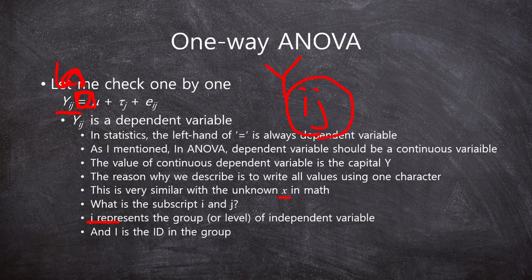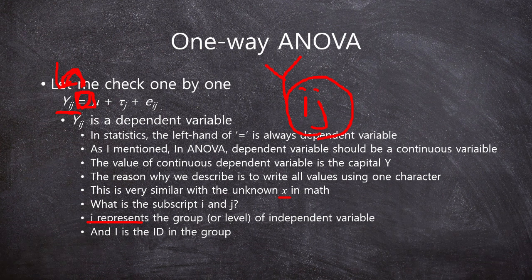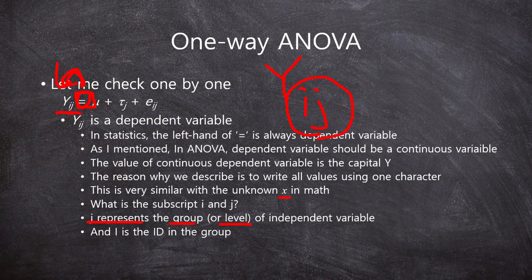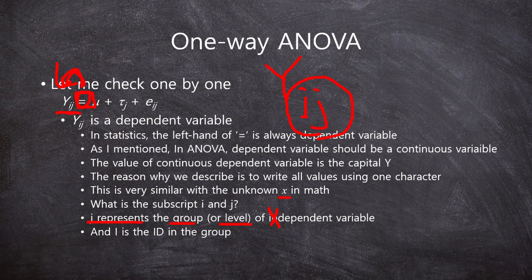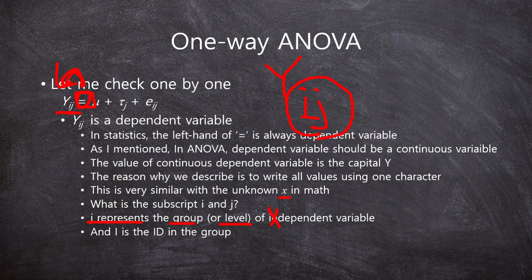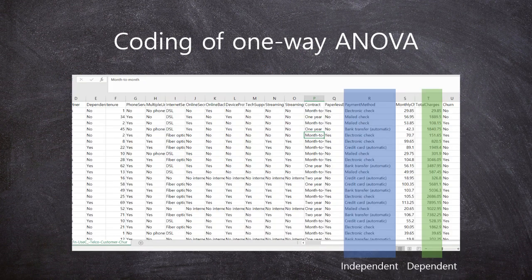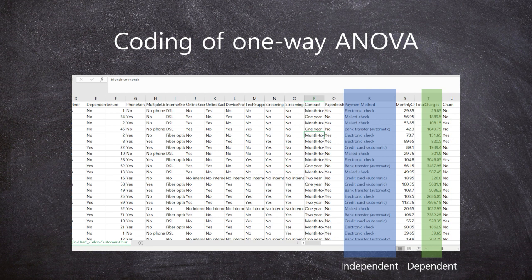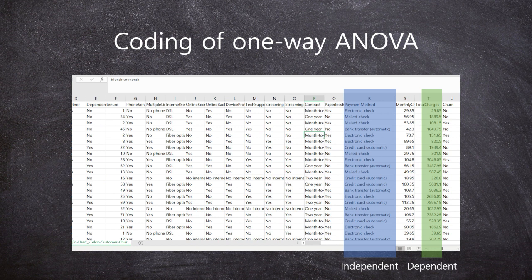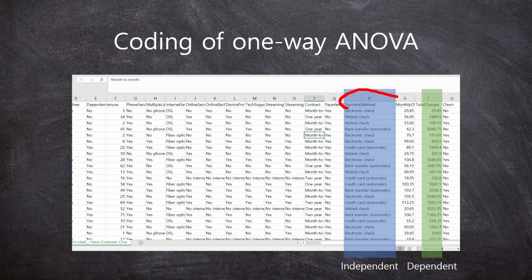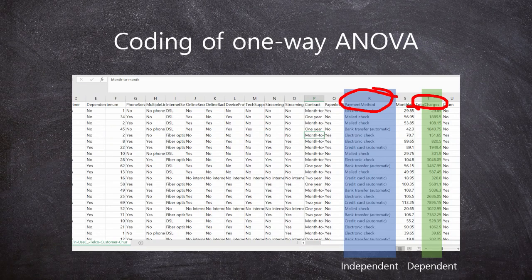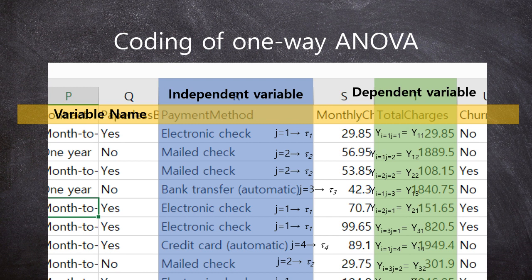The j is the same as in prior case. It means the group or level of independent variable. Likewise, here, dependent variable. And i means the id in the same group. Okay. So, I will show one example here. This is the screenshot of our data. As I said, in prior video, the payment method is independent variable and total charges is a dependent variable. And, I expanded the screenshot and I want to show one by one. For example.